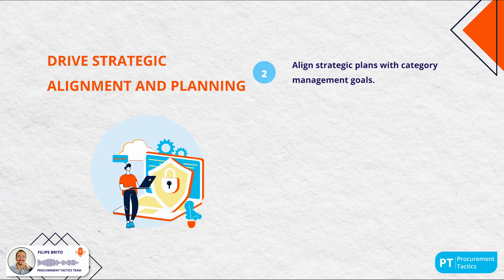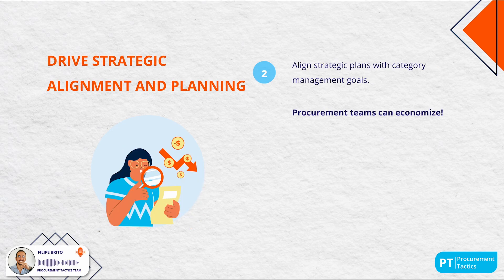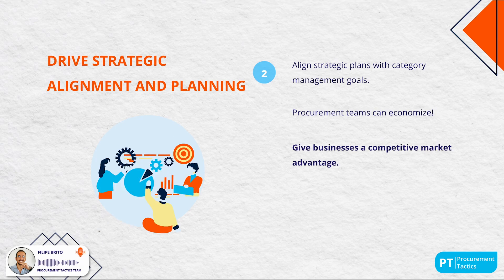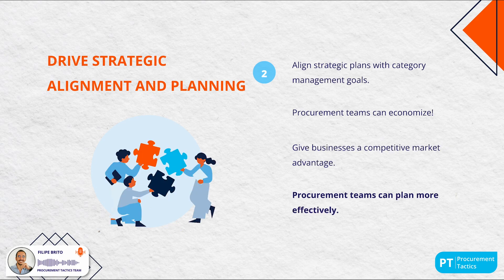Category management is also a driver for strategic alignment and planning. As a strategy, it allows for the growth of strategic plans that align with category management goals, grouping items so the procurement team can economize by making purchases within set boundaries. The primary aim is to secure goods at lower prices, giving businesses a market advantage and organizing products and services based on their function and type — enabling procurement teams to plan more effectively, set clear priorities and allocate resources efficiently.